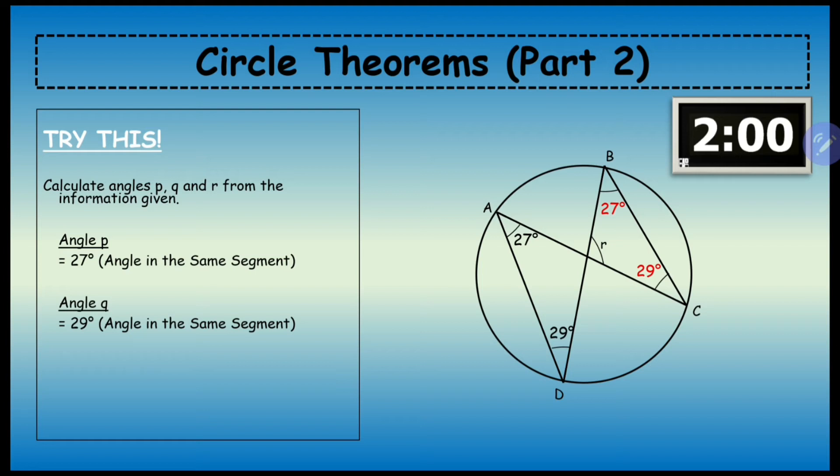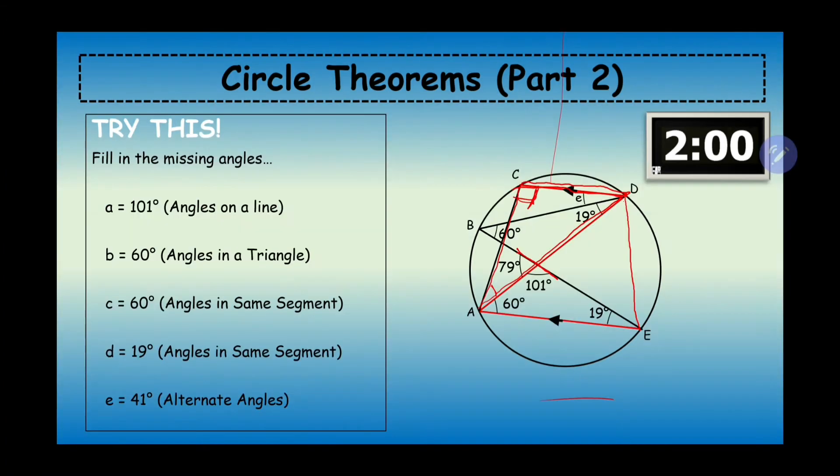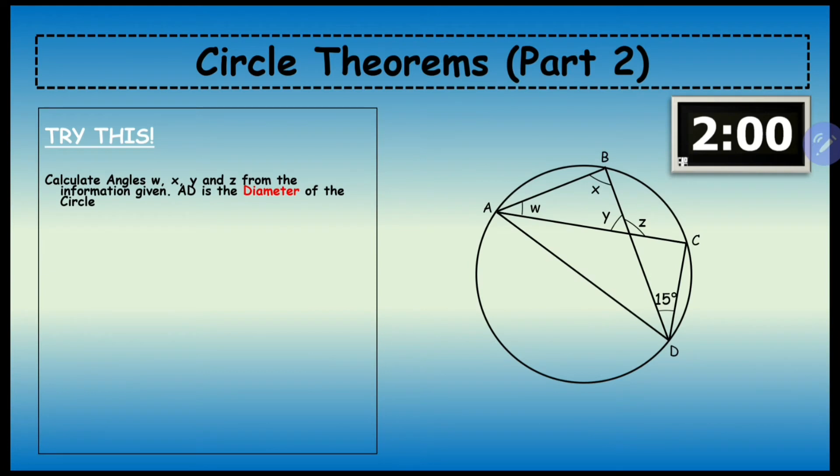Let's have a look at this one. It says calculate angles w, x, y, and z from the information given. AD is the diameter of the circle. What you need to remember is that you have two rules or two theorems within one question.